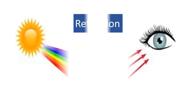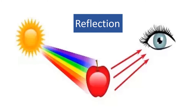We are able to see colors of objects due to reflection. White light is the bulk of all colors. For instance, when white light falls on an apple, it absorbs all colors of light.